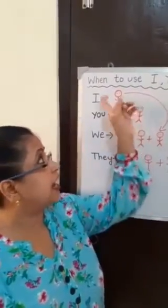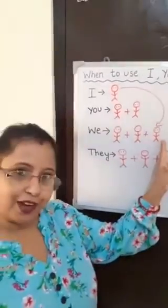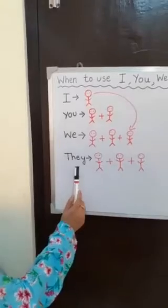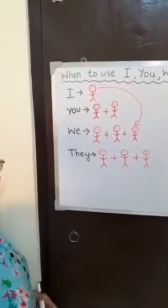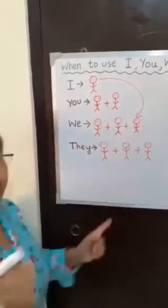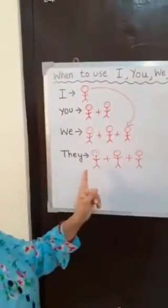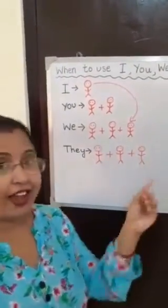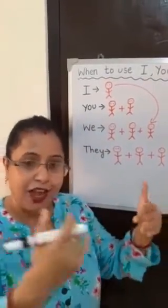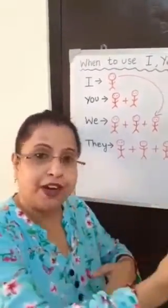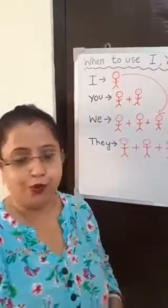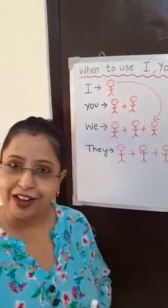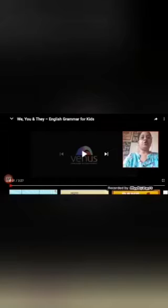So we use we when there are more than one person and I am included in that group. Now, when do we use they? We use they in case of more than one person where I am not included in the group. We are talking about some persons, but I am not included — we say they.